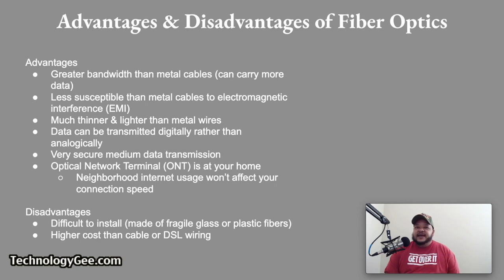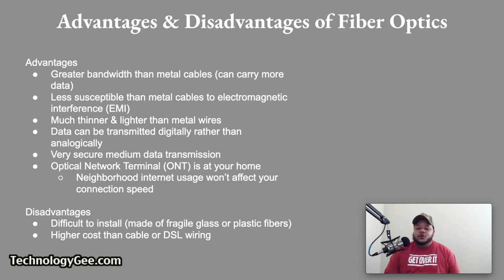Some advantages of fiber optics: fiber optic cables have a much greater bandwidth than metal cables, meaning they can carry more data. They are less susceptible to electromagnetic interference. They are much thinner and lighter than metal wires. Data can be transmitted digitally, which is the natural form for computer data. Fiber optic is also a very secure medium for data transmission, and the optical network terminal, also known as an ONT, can be located at your home so neighborhood internet usage will not affect your connection speed.